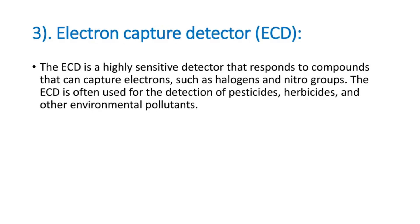Third, electron capture detector, ECD. The ECD is a highly sensitive detector that responds to compounds that can capture electrons, such as halogens and nitro groups. The ECD is often used for the detection of pesticides, herbicides, and other environmental pollutants.